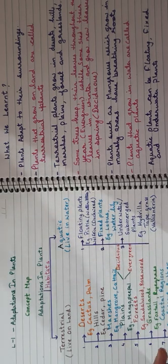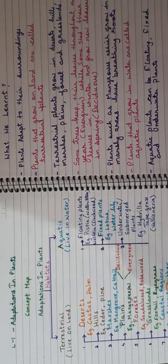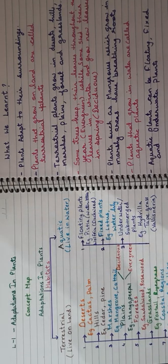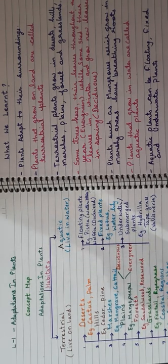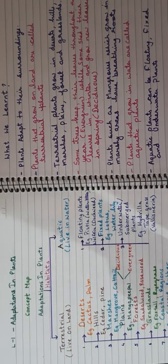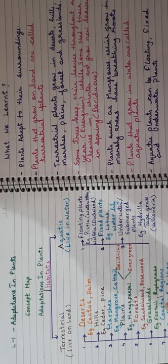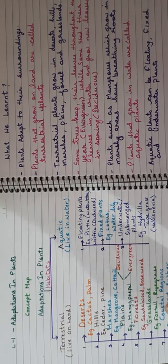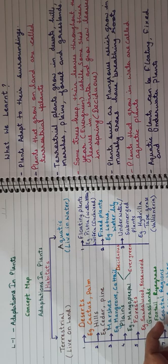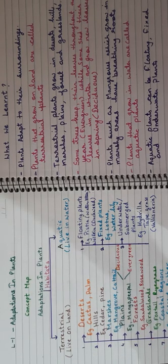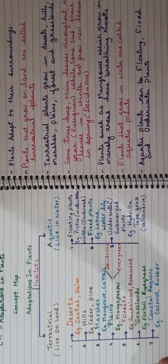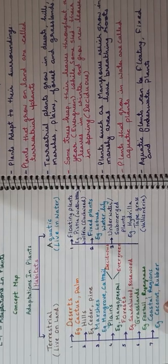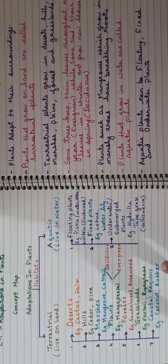The next category is coastal regions. As the name indicates, they are near the coast — coast means sea coast, where water areas are present. Examples are coconut and rubber.